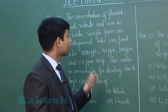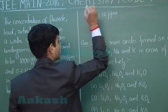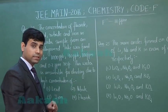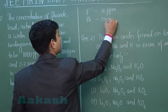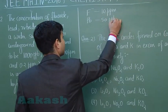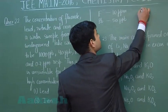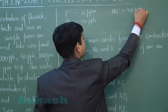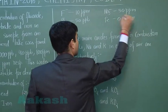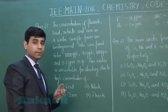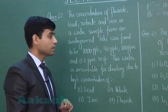For fluoride, the prescribed limit is 10 ppm. For lead, the prescribed limit is 50 ppb. For nitrate, the prescribed limit is 50 ppm, and for iron it is 0.2 ppm. In the case of fluoride, the sample has 1000 ppb which is less than 10 ppm, so fluoride is within limits.